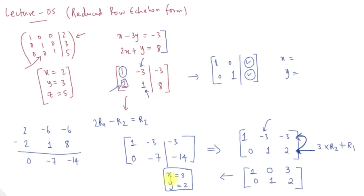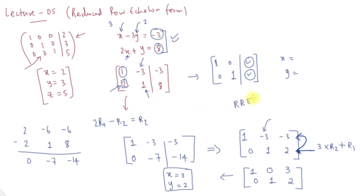We verify: x is equal to 3 and y is equal to 2. Substituting into x minus 3y: 3 minus 6 equals minus 3. And 2x plus y: 6 plus 2 equals 8. The equation is satisfied. This is the row reduced echelon form with a unique solution.